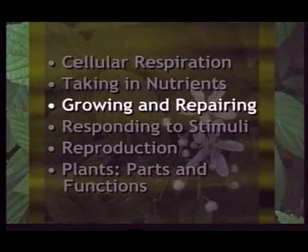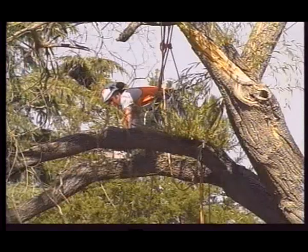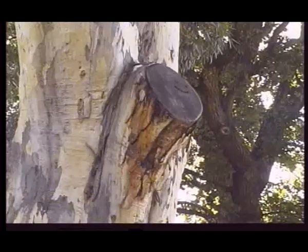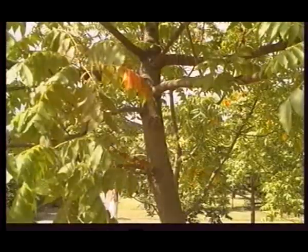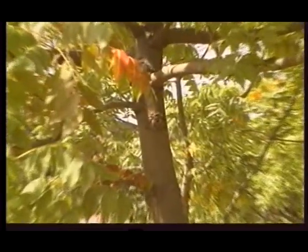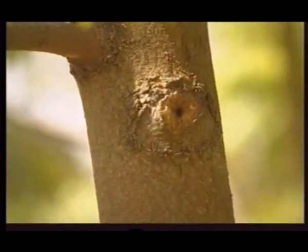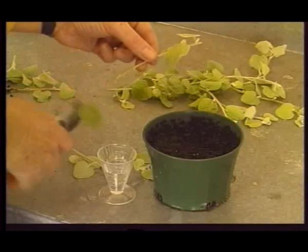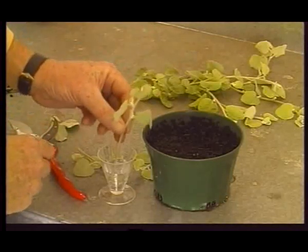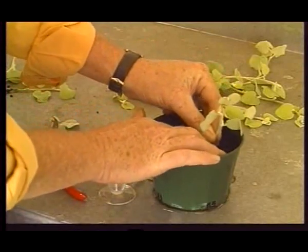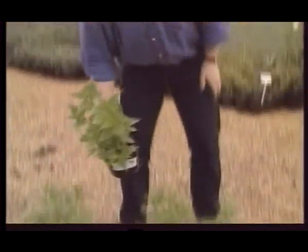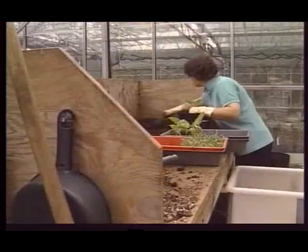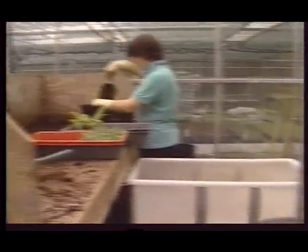Living things have the ability to grow and repair damage. Plants are particularly good at repairing damage. When part of a plant is broken or cut off, the plant usually continues to grow, sending out a replacement part or healing the wound. The ability to grow and repair makes it possible, in some plants, to develop a whole new plant — roots, stem, and leaves — from a small cutting. Horticulturists use this technique to make sure that garden and crop plants maintain all the same characteristics from one generation to the next.